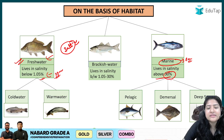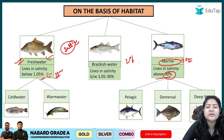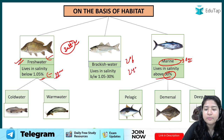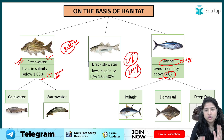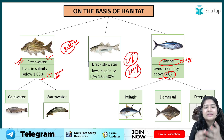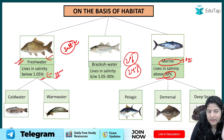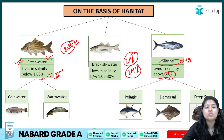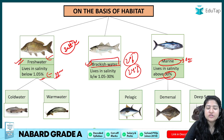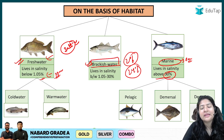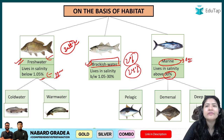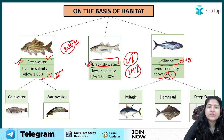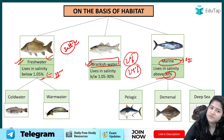In between these two extremes — any water body with salt concentration between 1.05 percent and 30 percent — is called brackish water. So fresh water: salinity below 1.05 percent; marine: above 30 percent; and brackish water: anything in between. Some fish like carp and trout prefer fresh water, making them fresh water fishes, while others are brackish or marine water fishes.